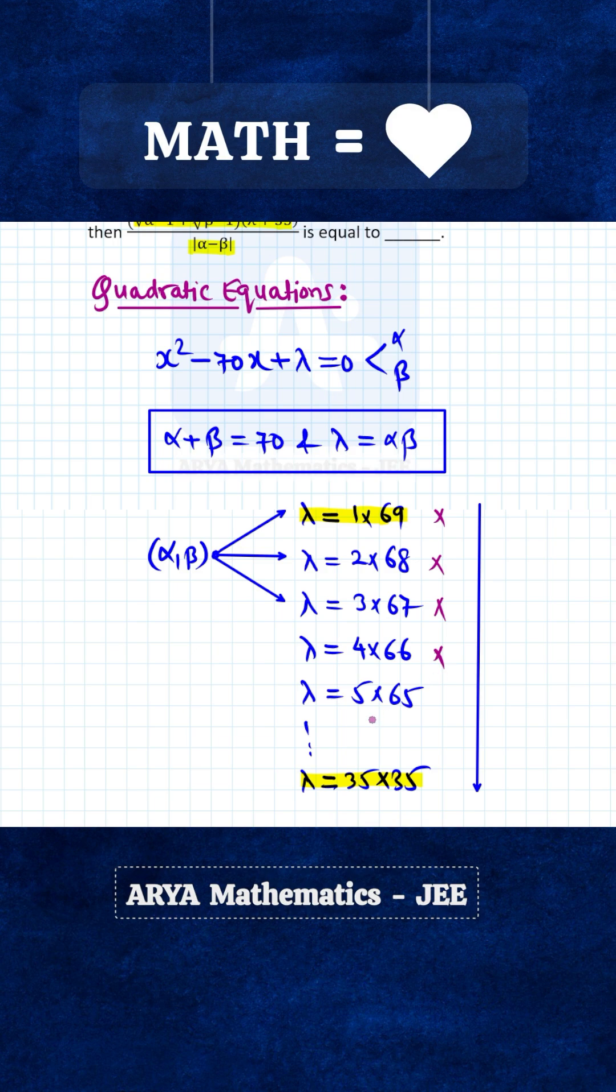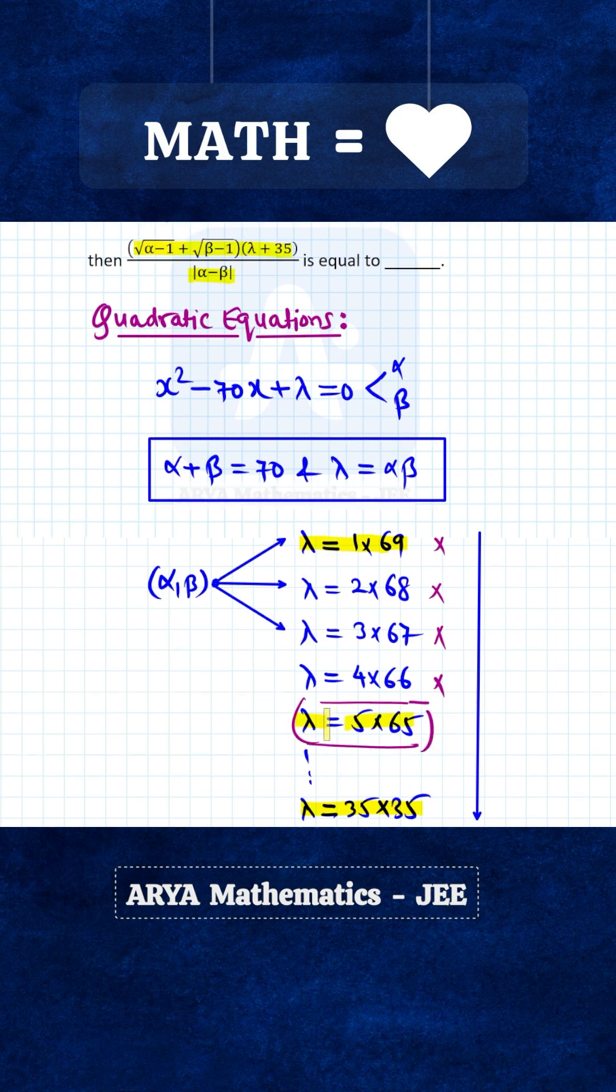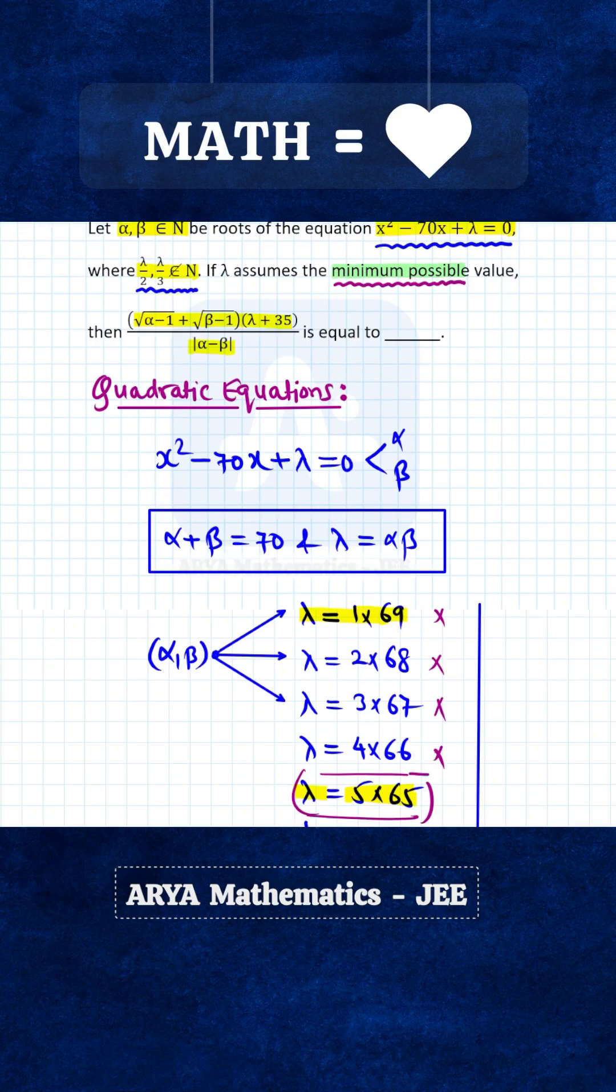The next number is again a multiple of 2. So the smallest possible value of lambda such that lambda is neither a multiple of 2 nor a multiple of 3 will be 5 into 65. In this case, one of the roots, let's say alpha, will be 5, another root beta will be 65, and lambda, which is the product of alpha and beta, will be 5 into 65.